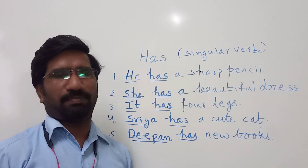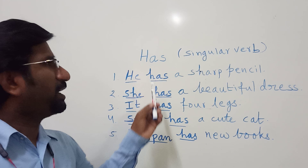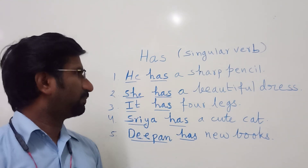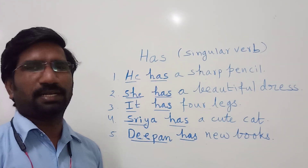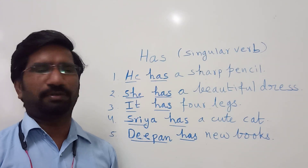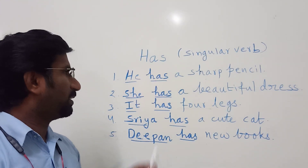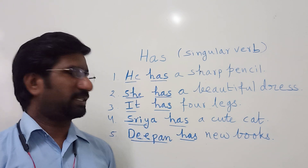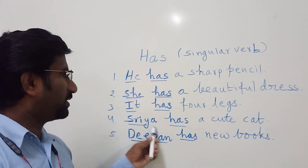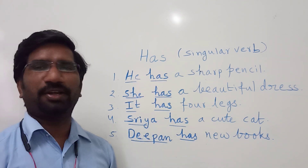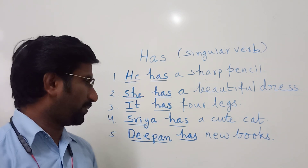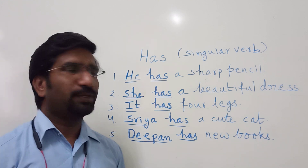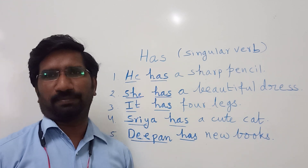Let us see some examples. He has a sharp pencil. She has a beautiful dress. It has four legs. Shriya has a cute dog. Deepa has new mix.